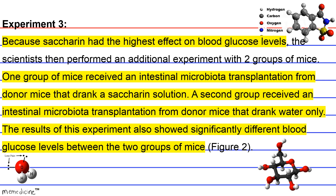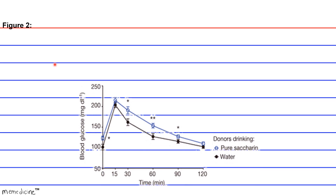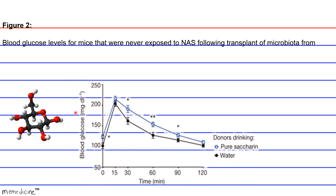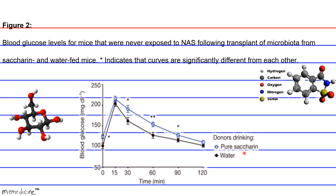Figure 2: Blood glucose levels for mice that were never exposed to NAS following transplant of microbiota from saccharin-fed and water-fed mice. The asterisk indicates that curves were significantly different from each other. The saccharin microbiota transplantation yields higher glucose levels compared to the water microbiota transplantation in the recipient mice.